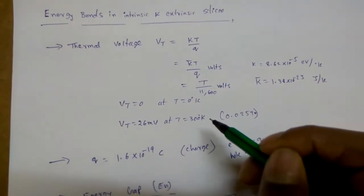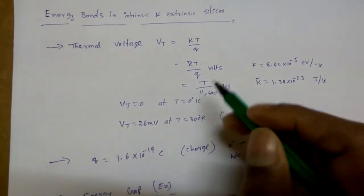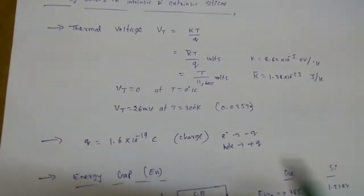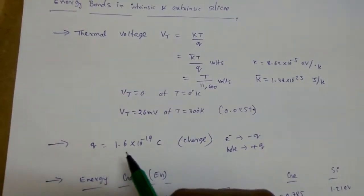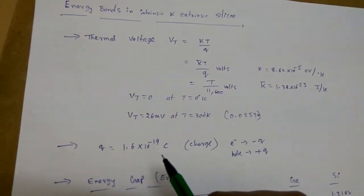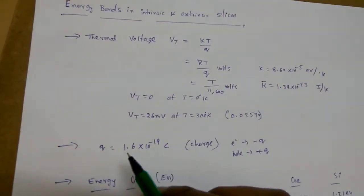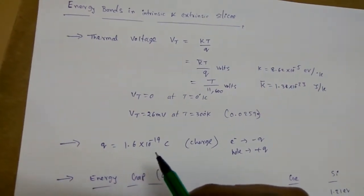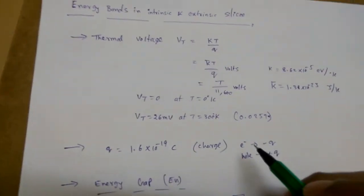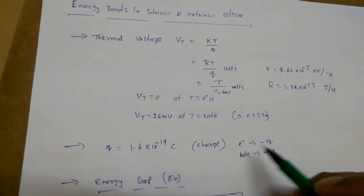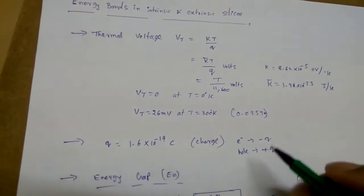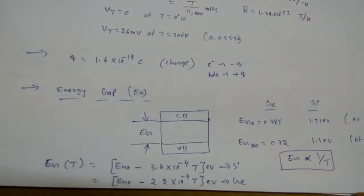Another very important value is the charge of an electron or a hole. It is fixed at 1.6×10⁻¹⁹ coulombs. For an electron it is negative, and for a hole it is positive.